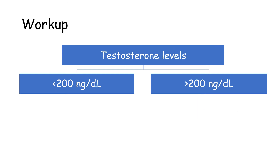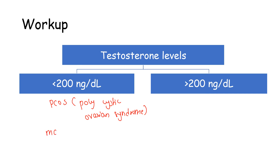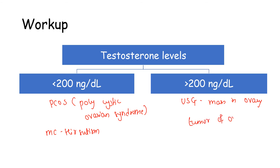If the level of testosterone is raised, we look at the specific value. If testosterone is less than 200 ng per deciliter, the most common cause is PCOS — polycystic ovarian syndrome, also known as PCOD or Stein-Leventhal syndrome — which is the most common cause of hirsutism in young females. If testosterone is greater than 200 ng per deciliter, we perform an ultrasound, and if a mass is seen in the ovary, it indicates a testosterone-secreting ovarian tumor.